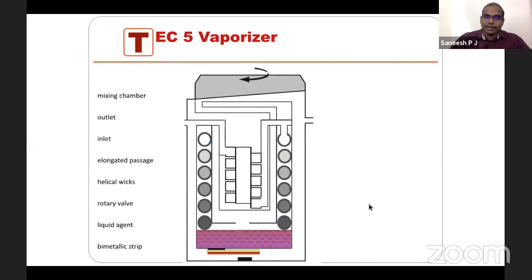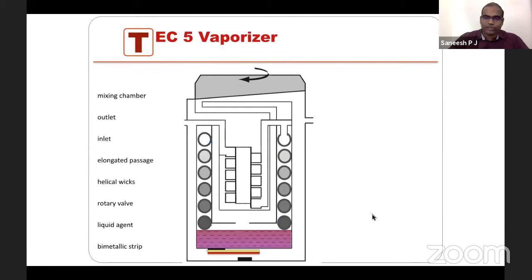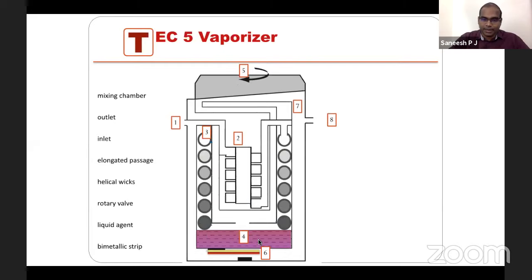The Tec 5 vaporizer: it is flow over, has wicks to maintain maximal saturation, variable bypass for regulation of output concentration, automatic thermocompensation via bimetallic strip at the bottom, agent specific for isoflurane, a plenum vaporizer, and vaporizer out of circuit. Looking at how the Tec 5 works: you can identify the vaporizer inlet, the elongated passage called the IPPV assembly, the helical wicks, the liquid vaporized agent, and the rotary valve.